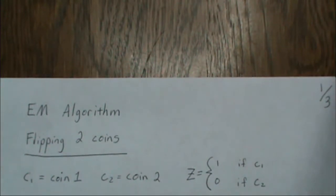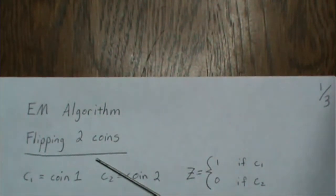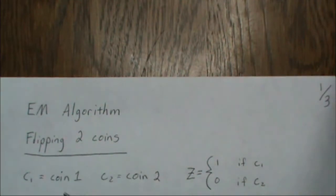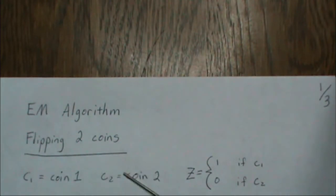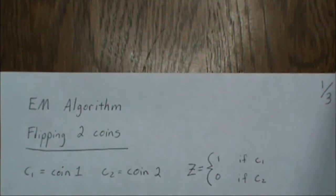This is another example of the EM algorithm, Part 2b. Here we're going to be flipping two coins in a unique way and then use the EM algorithm to find the probabilities of a head for each coin, as well as the probability that we're selecting a particular coin — that will make sense in a moment.